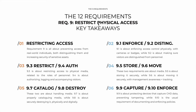What are our key takeaways? First, this requirement is about restricting access — preventing access from real-world individuals, both distinguishing them but also increasing the security of sensitive assets. 9.1 is about enforcing access control physically, either with cameras or authentication for safe rooms, while 9.2 is about distinguishing visitors — they cannot blend in with personnel, with different badge colors and different access permissions.